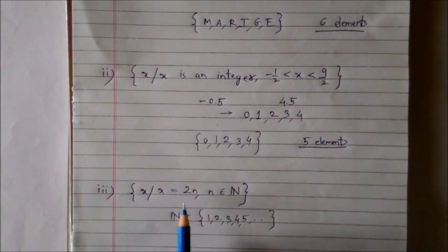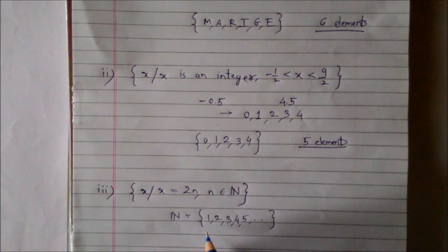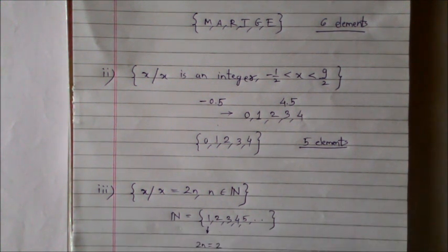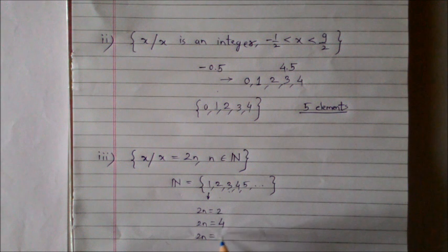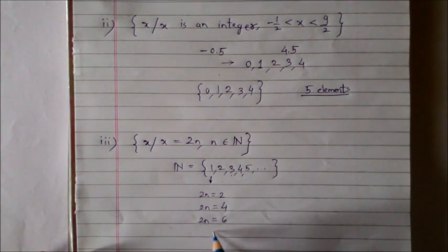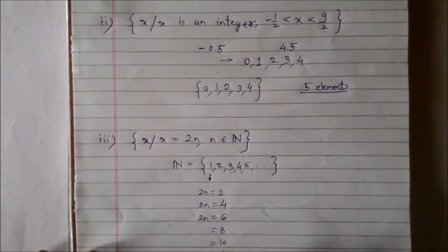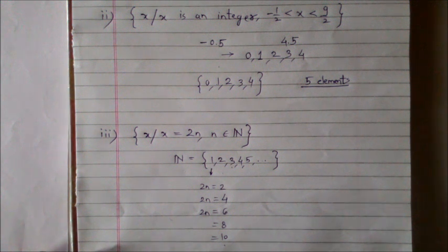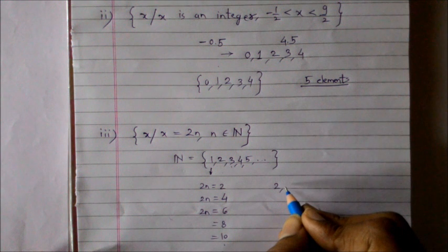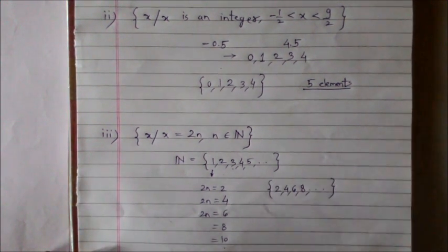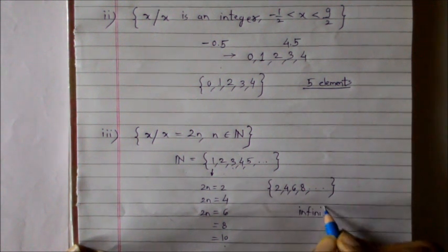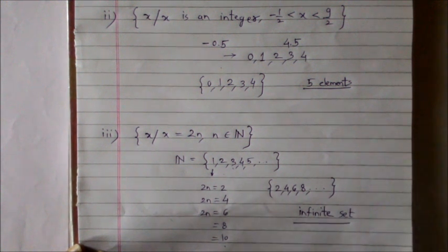Now the condition on x is it should be twice the element which belongs to the set of natural numbers. So if I consider one, then 2n will be two. If I consider two, then 2n will be four. If I consider three, then 2n will be six. So if I go on writing this I will get eight, then ten, and so on. Thus I am getting the set of all even natural numbers which are two, four, six, eight, and so on. This will be our required set and note this is an infinite set.